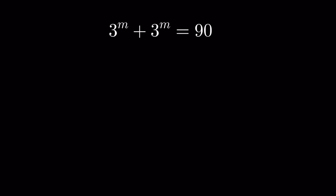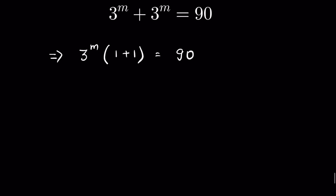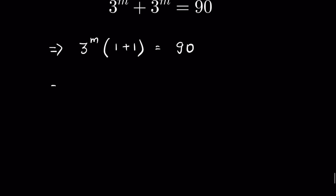3 to the power m plus 3 to the power m is equal to 90. We have to find the value of m. Now here 3 to the power m we can take common and write 3 to the power m times parenthesis 1 plus 1 is equal to 90, or 3 to the power m times 2 is equal to 90.